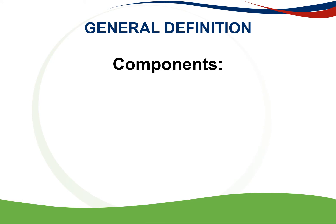The general deduction formula can be broken up into different components. The first component, which is the most important, is the carrying on of a trade. The taxpayer must carry on a trade before we can deduct anything. Although this definition is very wide, it does not include all forms of income-producing activities. Passive investment activities are not considered to be trading activities. For example, activities producing interest, dividends, annuities, and pensions are not included in the definition of trade.